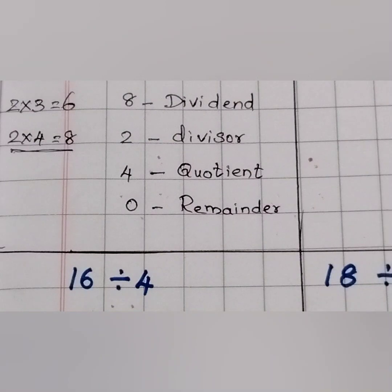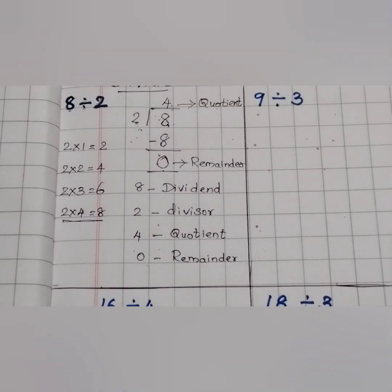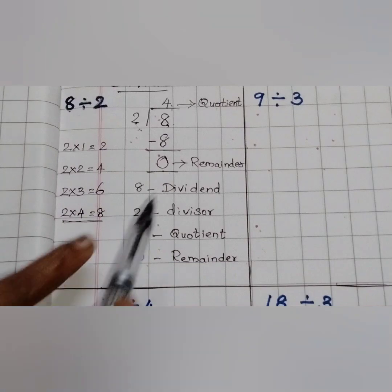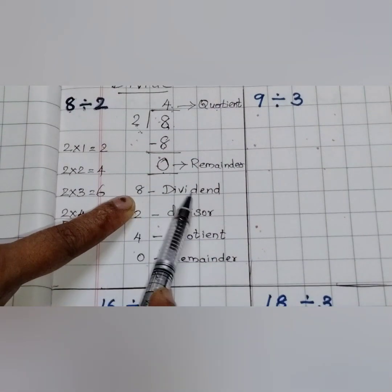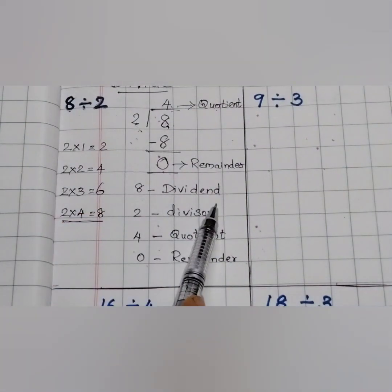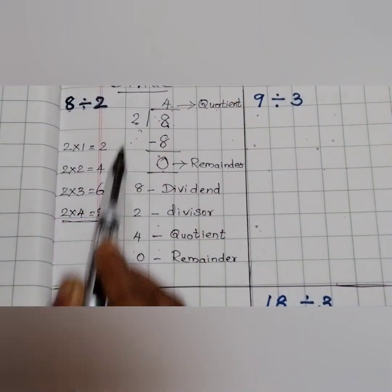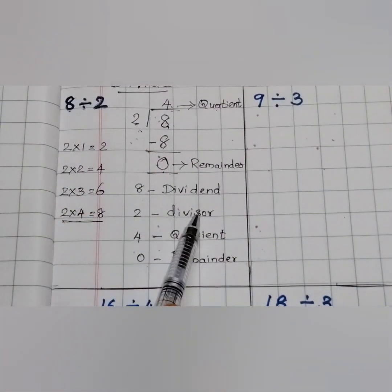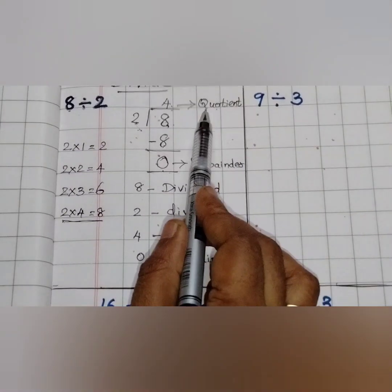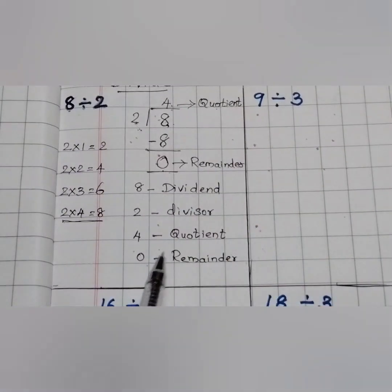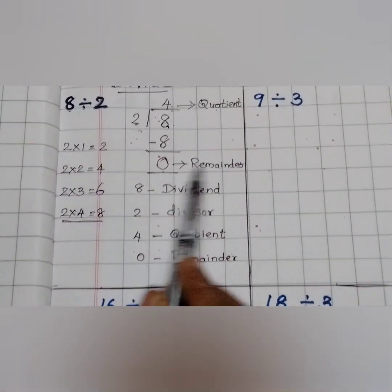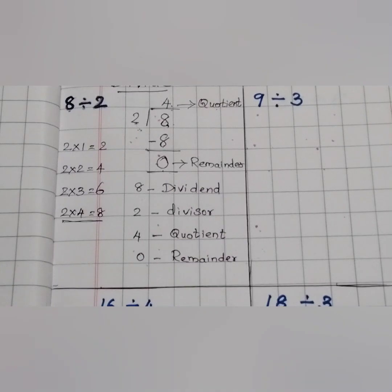To recap: 8 is the dividend, 2 is the divisor, 4 is the quotient — our result for division — and 0 is the remainder.